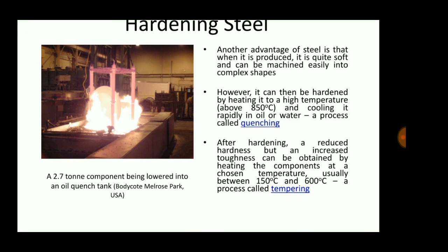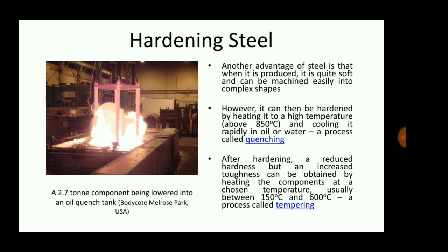Steel is initially soft and can be machined easily into complex shapes, but it can be hardened by heating to above 850 degrees Celsius and rapidly cooling in oil or water — this is called quenching. After hardening, reduced hardness but increased toughness can be obtained by heating the components at a chosen temperature, usually between 150 and 600 degrees Celsius — this process is called tempering. These heat treatment processes protect the propeller shaft from environmental factors and property changes.